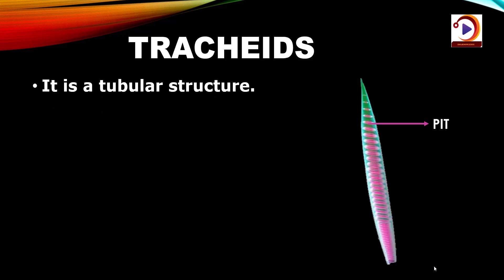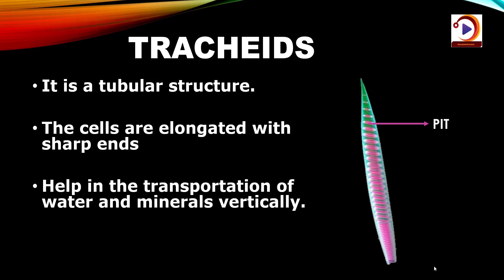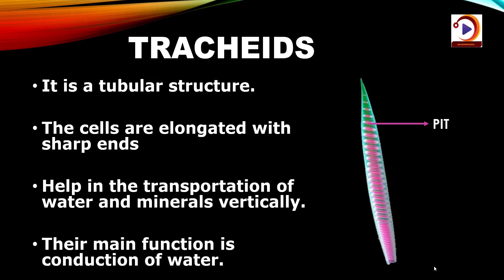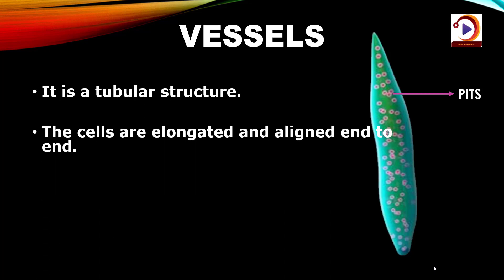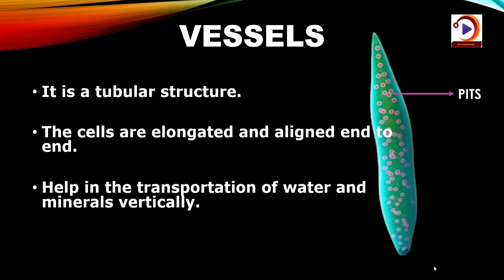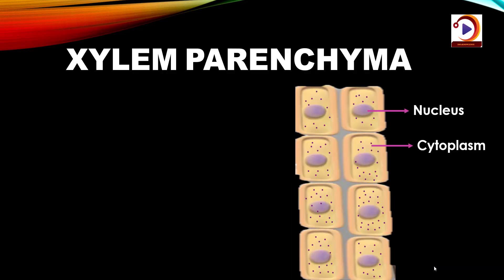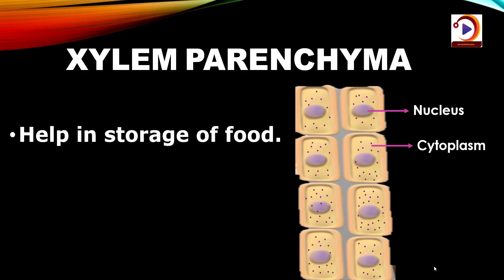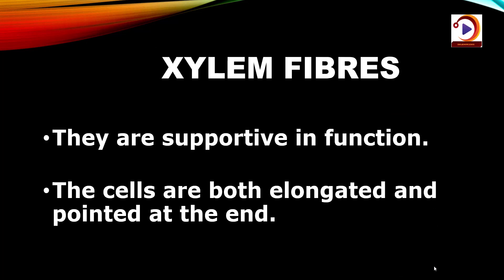Tracheids are tubular structures with elongated cells and sharp ends. They help in transportation of water and minerals vertically. Vessels are also tubular structures with elongated cells aligned end to end, and they also help in transportation of water and minerals vertically. Xylem parenchyma helps in storage of food and conducts water sideways. Xylem fibres simply provide support, and their cells are both elongated and pointed.